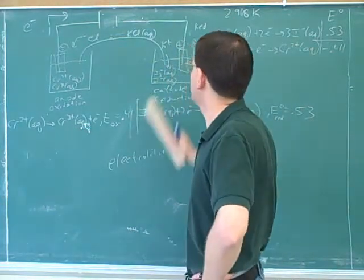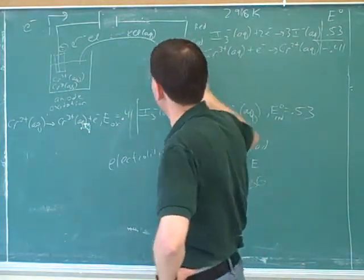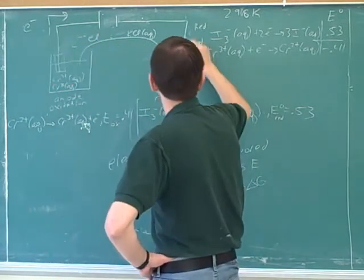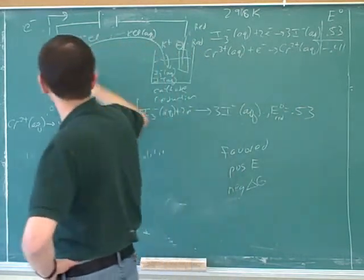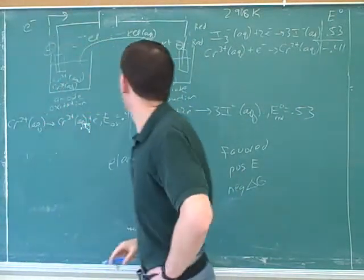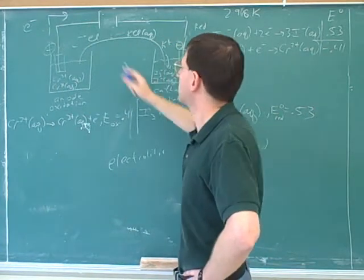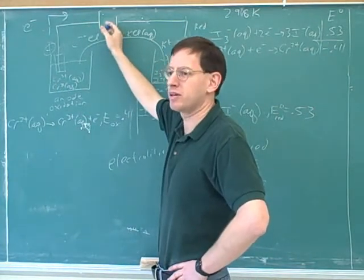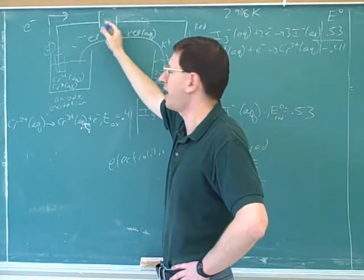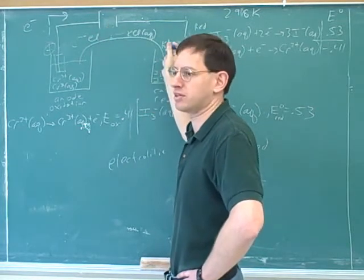But now the electrons don't want to move towards the cathode. Why do they not want to move there? Because it's negative. And because this is positive. Why are they moving here if this is negative? Because the battery is forcing them to. That's why we need the battery. They wouldn't do this naturally, but the battery is providing outside energy that forces them here.